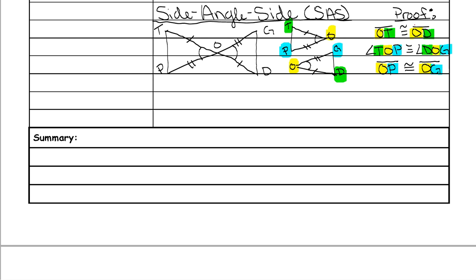On the test, to figure out if something is SAS, you label what you're given — a side, an angle, and another side. You always want to start naming from one of the S's, not the angle, because the angle is between two other things. You go side-angle-side, always moving toward something, which gives you SAS.